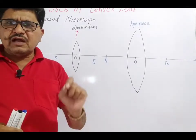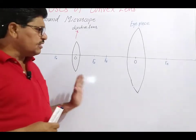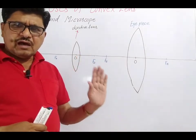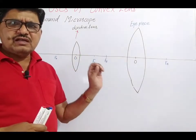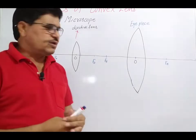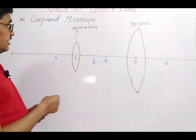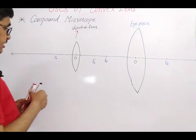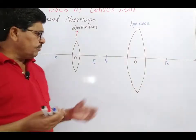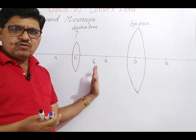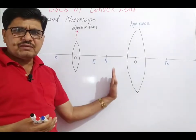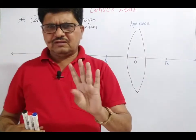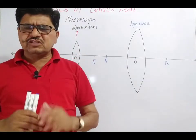The focal length of the objective lens is less than the focal length of the eyepiece in the compound microscope. The object is placed in front of the objective lens, and the image of the object is produced beyond F_O. We can see that images are formed by the convex lens in six stages — in which case the image of the object is produced beyond the focus.